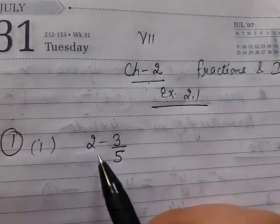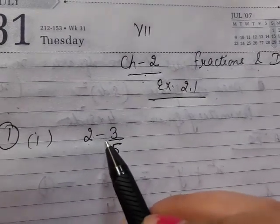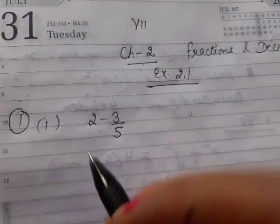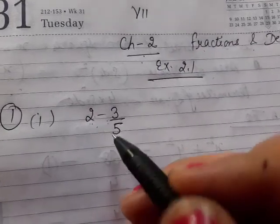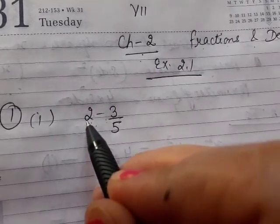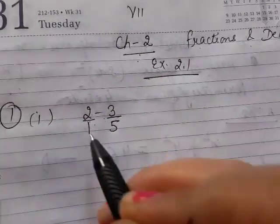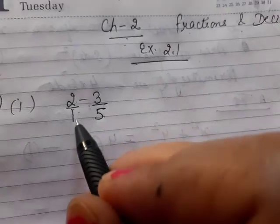When we solve fractions with plus or minus, we take the LCM of the denominator. Now your first question, first part: 2 minus 3/5. Here the denominator is not given, so we take it as 1. One or five, the LCM will be 5.